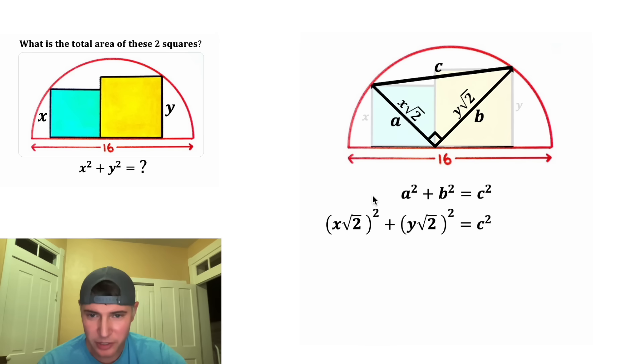For this first term, the square is going to go both to the x and the root. So we have x squared root two squared. And then the same thing for the second term, we'll have y squared root two squared. And then on the right hand side, we'll have c squared.